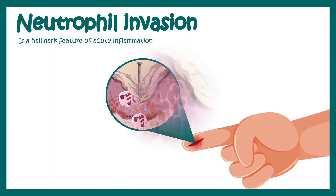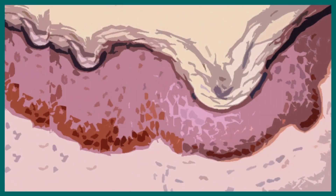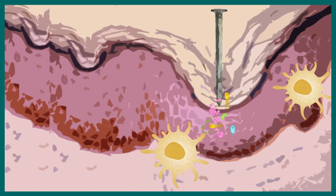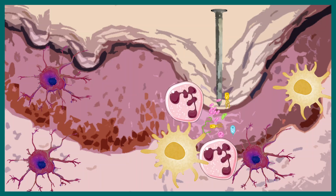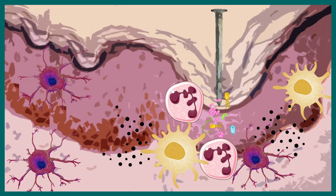Let's say we are struck by a nail and some bacteria from a rusty nail have entered our body. Neutrophils are the first responders — they can phagocytose those bacteria and fight them. Other cells such as resident macrophages and dendritic cells can also eat up the pathogen and coordinate with neutrophils by secretion of several cytokines.